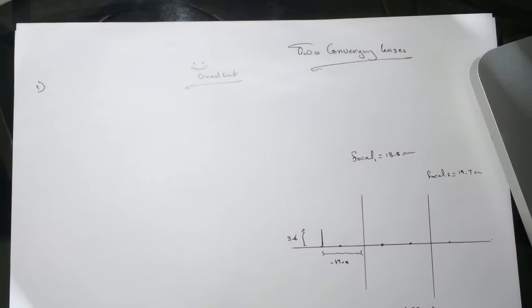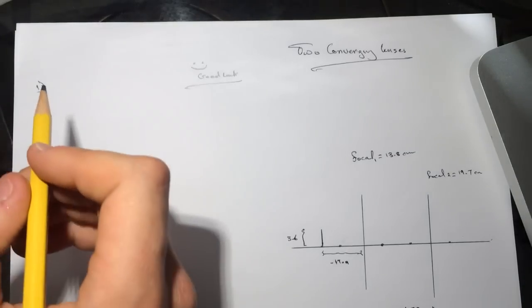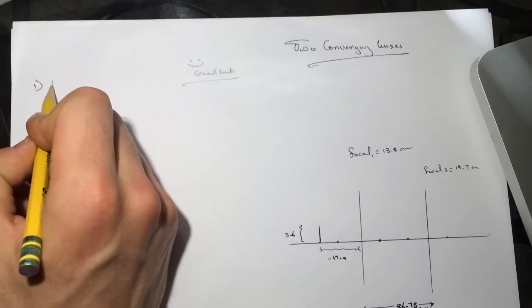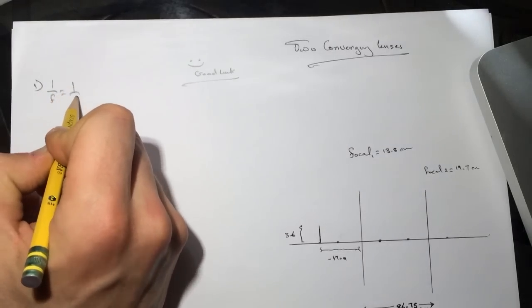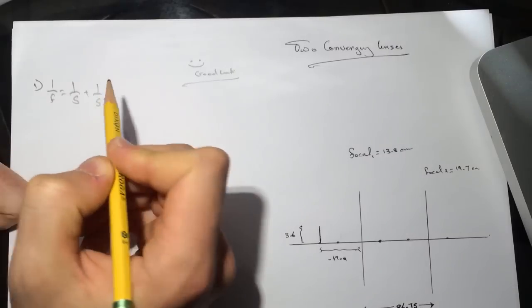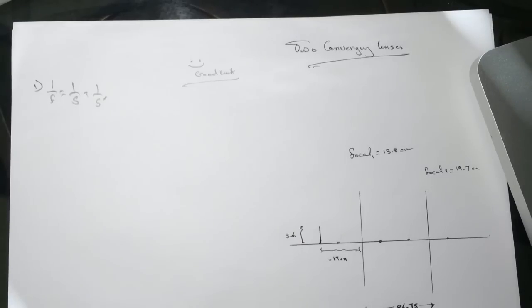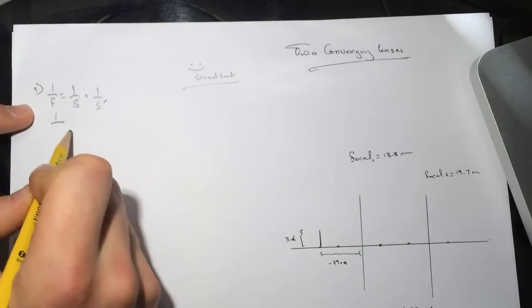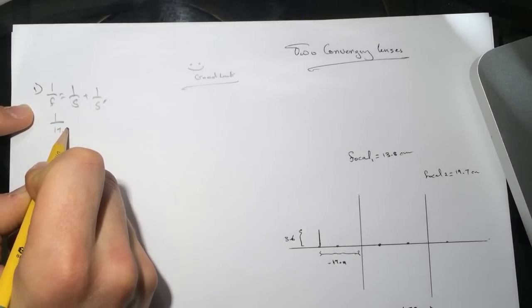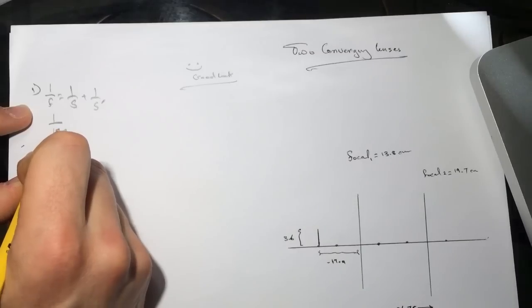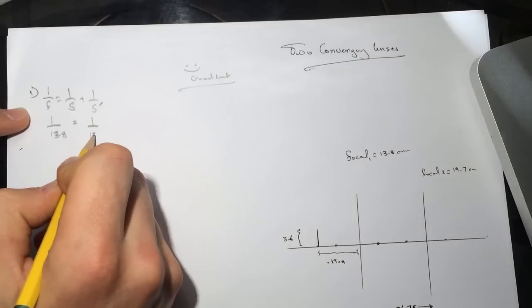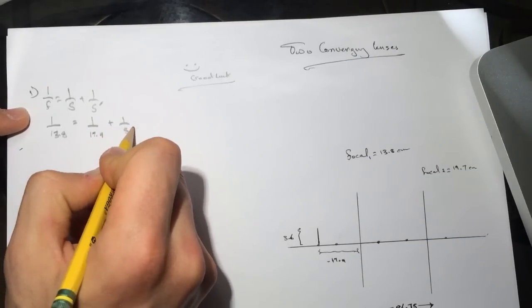What is X1, the X coordinate of the image and arrow formed by the first lens? So, it's 1 over F equals 1 over S plus 1 over S prime. The focal for the first one is 1 over 17.9. Wait, the focal is 13.8. So the focal equals 1 over the 17.9 plus 1 over S prime.